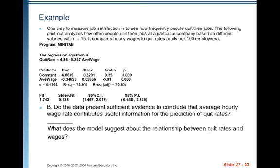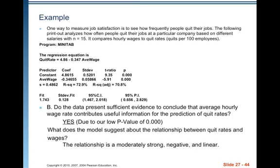Do the data present sufficient evidence to conclude that average hourly wage contributes useful information for prediction of quit rates? What does the model suggest about the relationship? Yes — due to our low p-value of 0.00, we have evidence that the slope is something other than zero, meaning hourly wage makes a useful contribution to information about quit rates. The model shows evidence of a linear relationship, and with correlation around negative 0.85, there is a moderately strong negative linear relationship between the two variables.